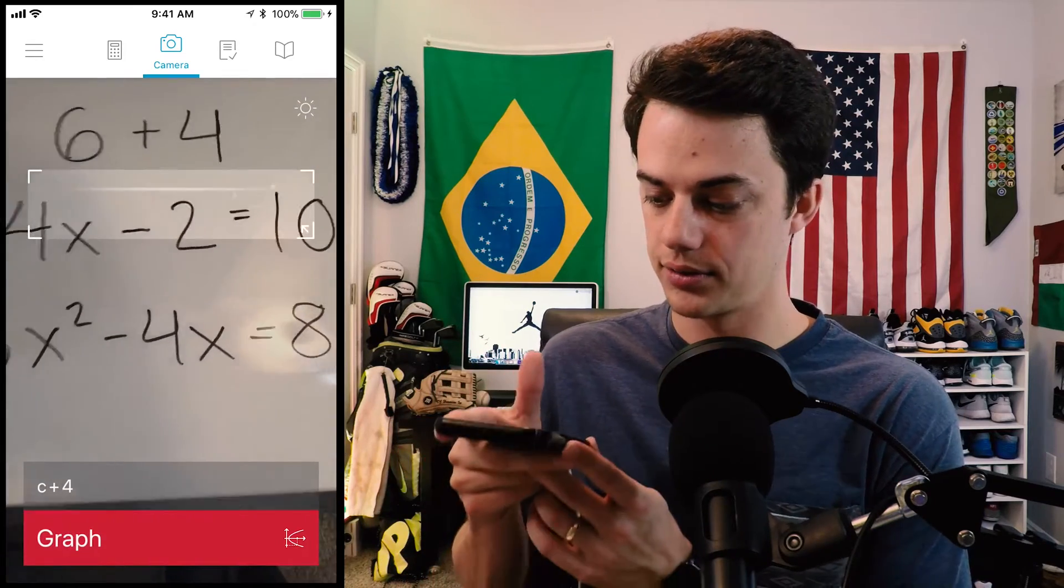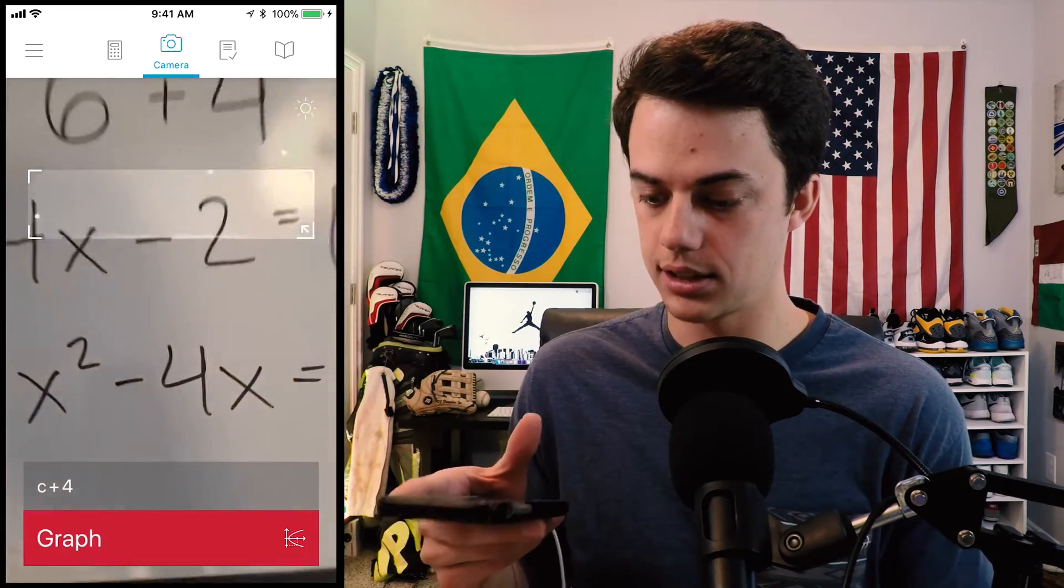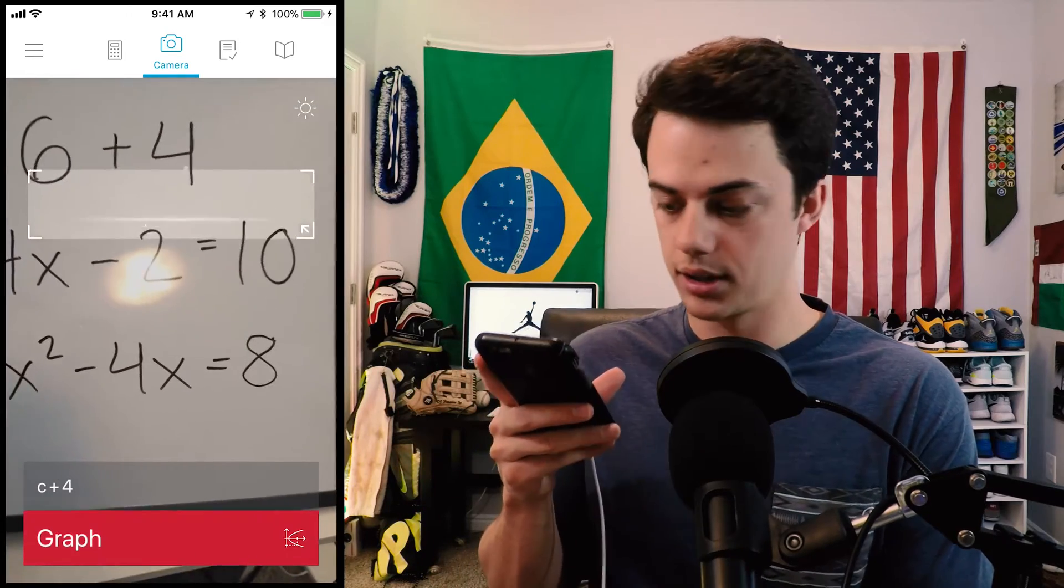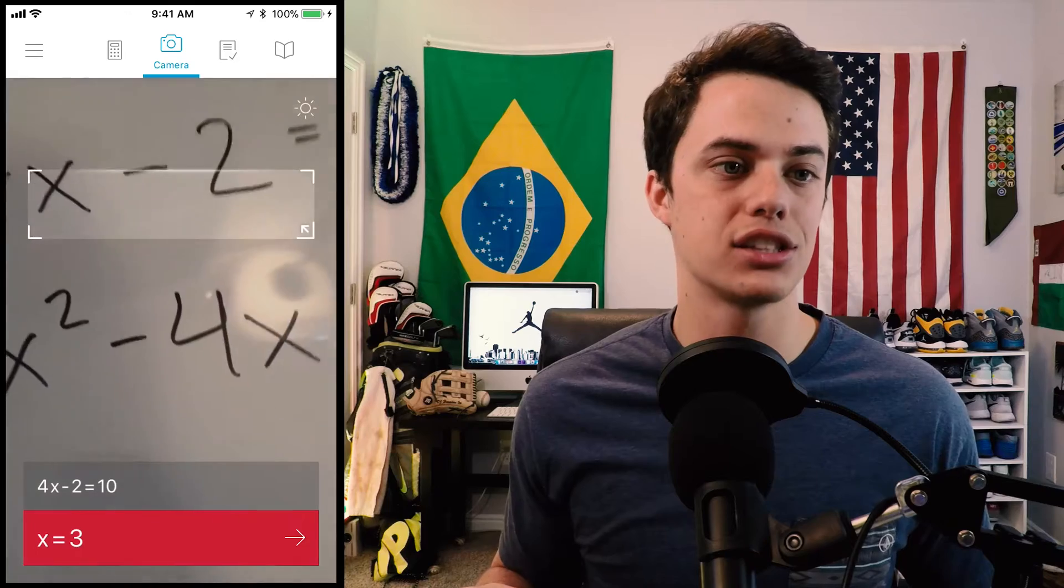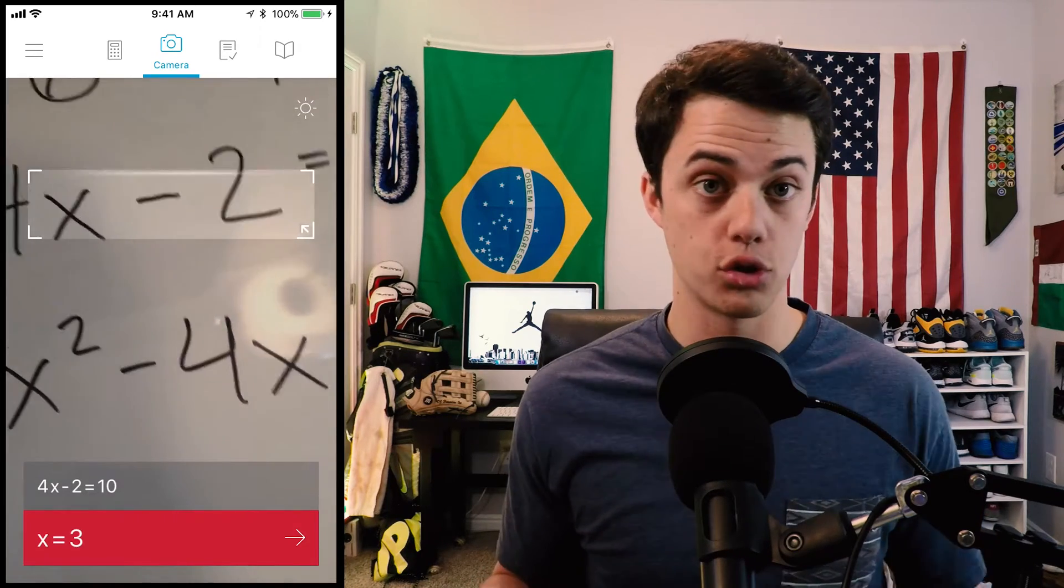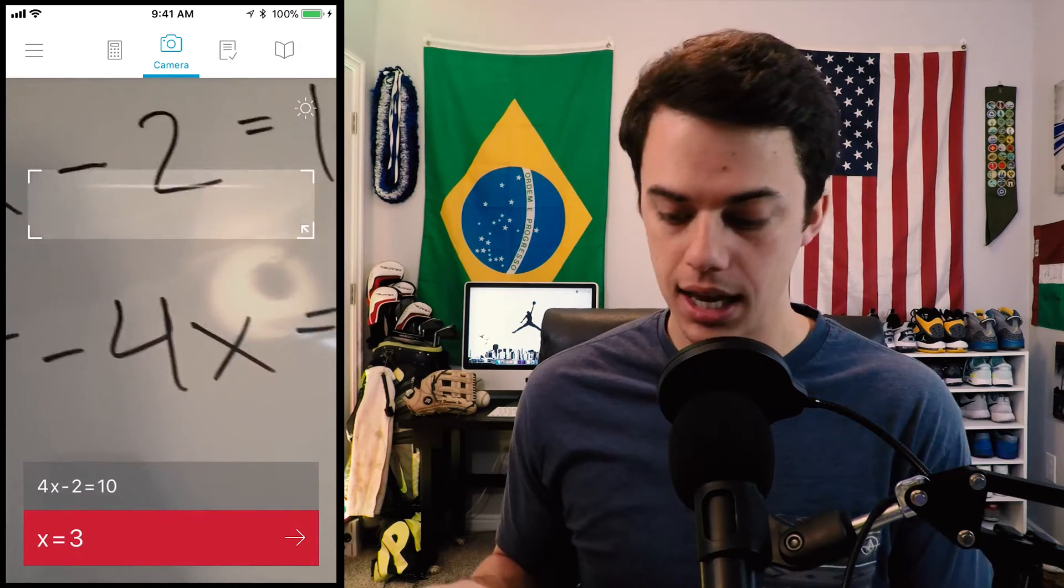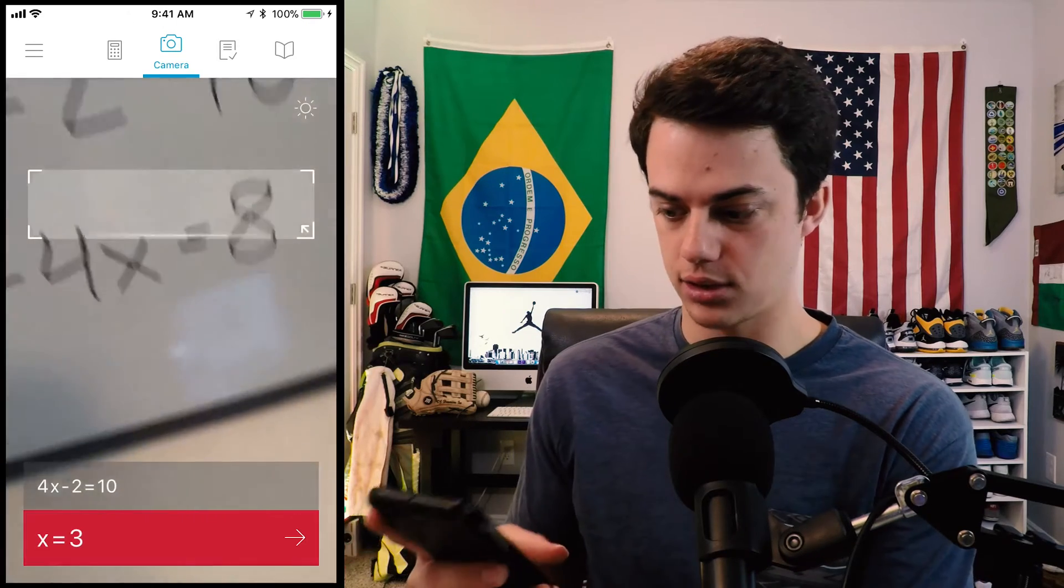Now let's try this other one. Sorry I wrote really big. I guess I should have wrote a little bit smaller. Four x minus two equals ten, x equals three. That's the cool thing is it can solve for x for you. So if you're doing algebra problems it can do it for you. Let's see if it can do this last one.